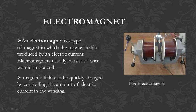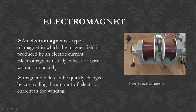An electromagnet is a type of magnet in which the magnetic field is produced by an electric current. It usually consists of a magnetic core with wire wound into a coil. The coil is wound around two blocks and as a result a magnetic field is produced between them.